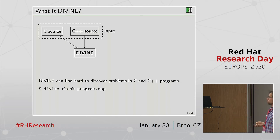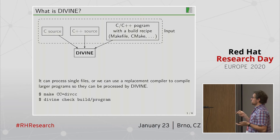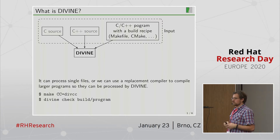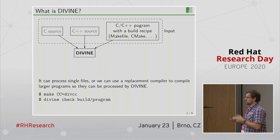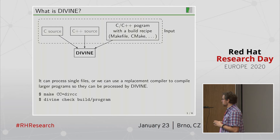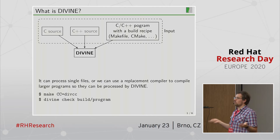You can take a C or C++ source and give it to Divine and it will do something with it. Usually you don't have just one file, so you can take a C or C++ program which has something like a make file or CMake and use a special compiler we provide to compile this program so that Divine can understand it. Divine can't understand binary or source code directly — it has to have a special representation, basically the LLVM intermediate representation. So you can take your project, build it with the make file like this, and then just point Divine to the result.